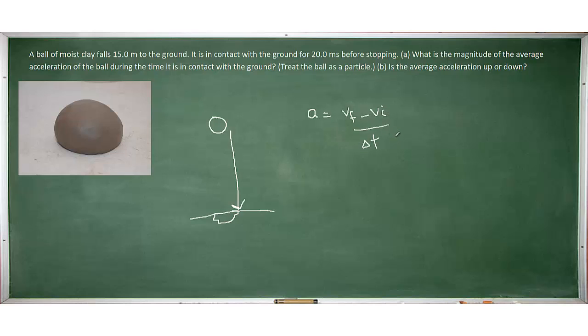Now a couple of things to note here, because the ball is splattering on the ground we can probably guess what its final velocity is going to be. You might want to pause the video and think about that for a moment but hopefully you came up with the final velocity of the ball equaling 0 meters per second.